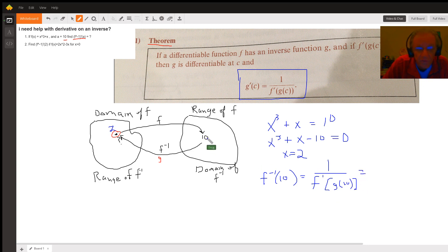I put 10 into the inverse function, which I don't even know what it looks like, but I know it had to map back to 2. So this is 1 over f prime of 2.